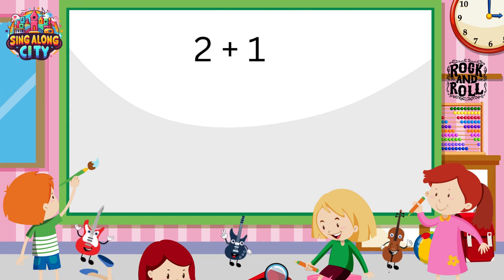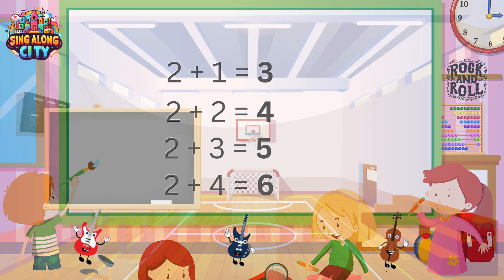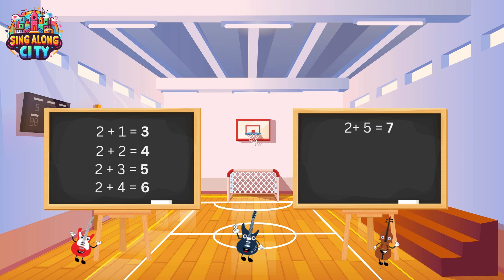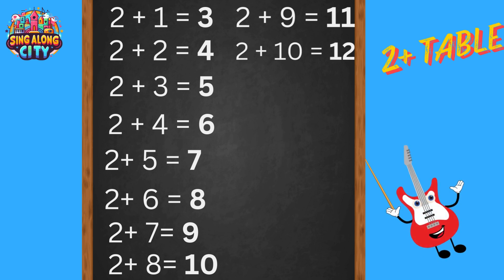2 plus 1 is 3. And 2 plus 2 is 4. 2 plus 3 is 5. And 2 plus 4 is 6. Two plus five is seven, and two plus six is eight, two plus seven is nine, and two plus eight is ten, two plus nine is eleven, and two plus ten is twelve.